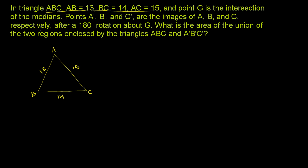And then they tell us point G is the intersection of the medians. If you've watched the video on medians and centroids, you might recognize that the intersection of the medians is just the centroid. This is the midpoint of AC, so the line connecting B to that midpoint is a median. The line connecting vertex A with the midpoint of BC is also another median. And then finally, you have your third median connecting C to the midpoint of AB. These three medians always intersect in a point called the centroid, and they imply that it's going to intersect at point G.